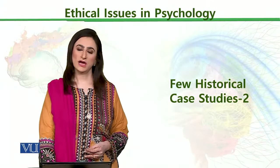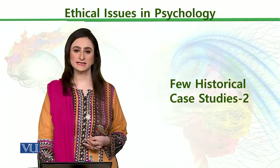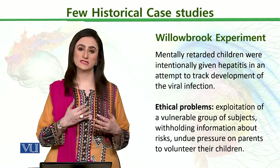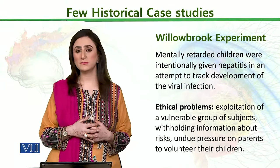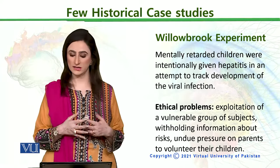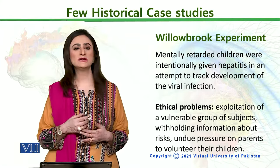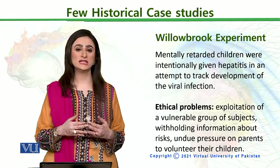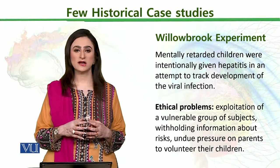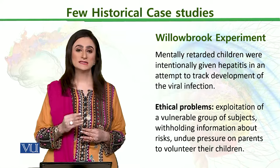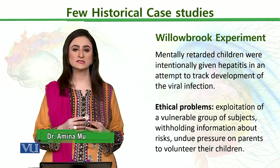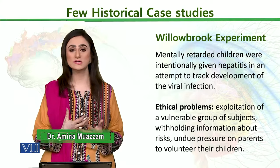Today we are going to look at some more traditional case studies. We are talking about the Willbrook experiment. Willbrook experiment is very important and is classically known because it was conducted on mentally retarded children. Those mentally retarded children were intentionally given the hepatitis germs — live hepatitis germs were induced into mentally retarded children to see how the disease progression occurs.